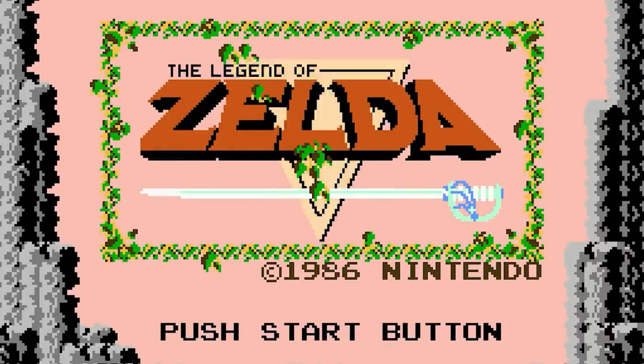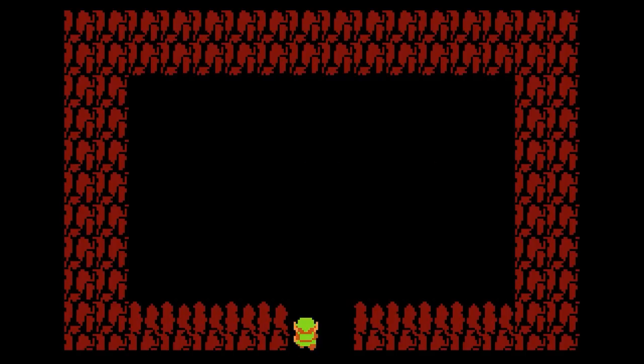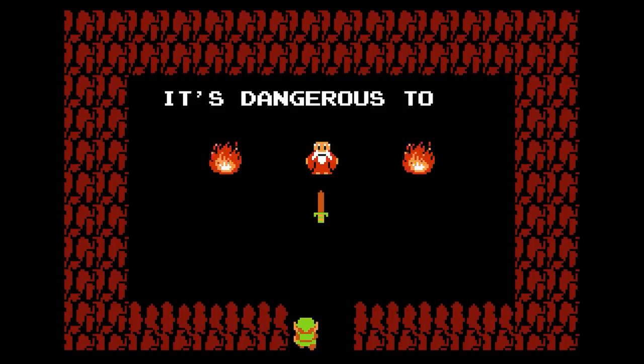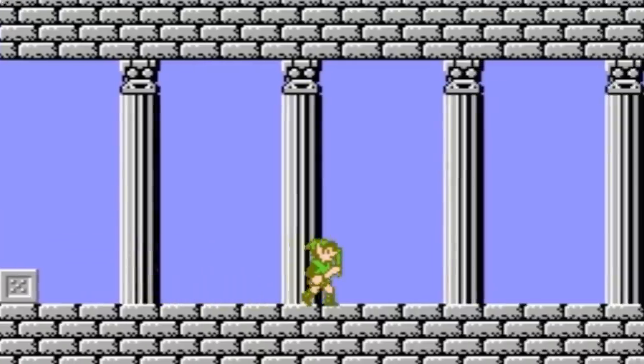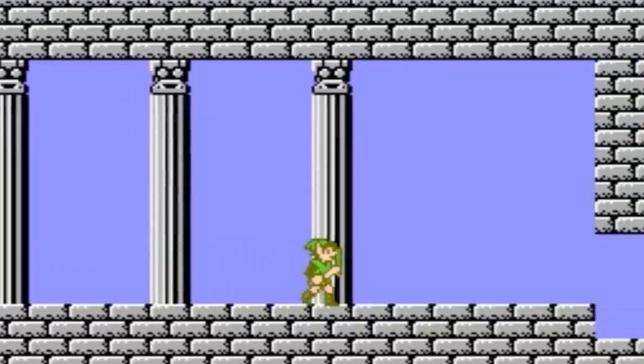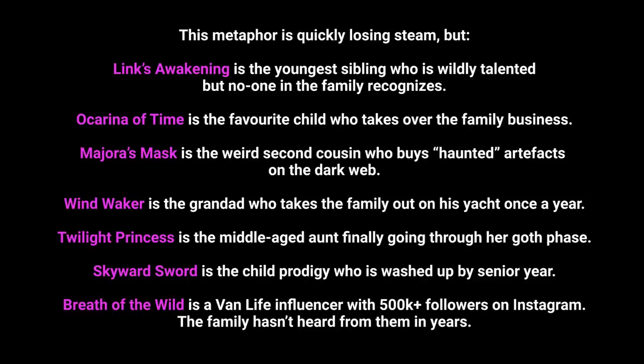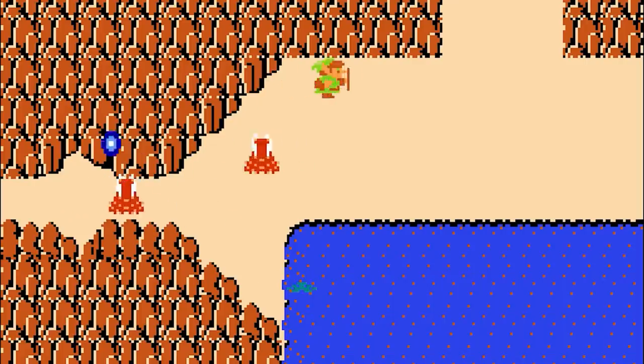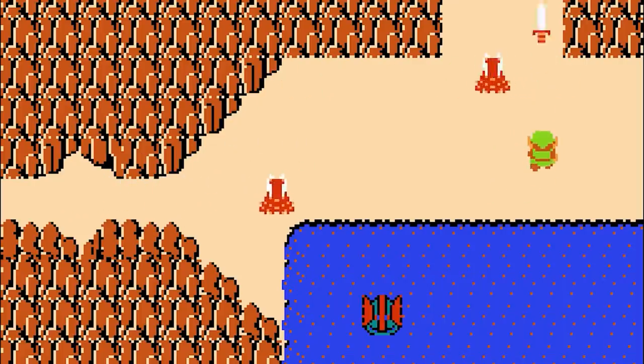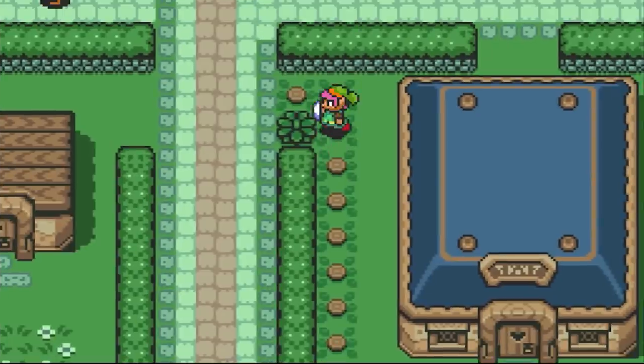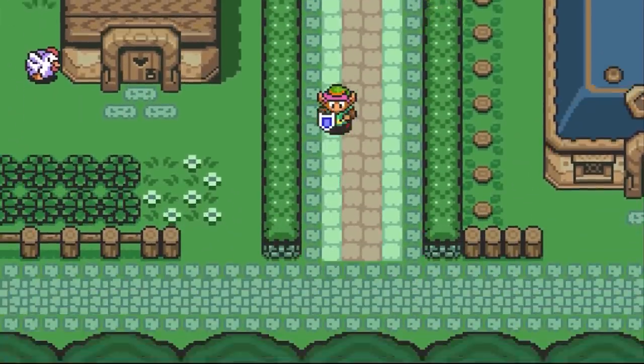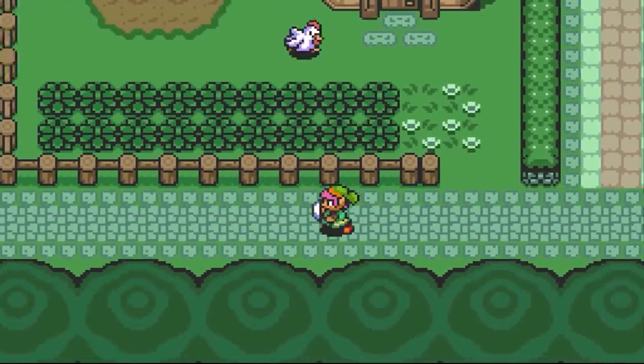Okay, I guess the original Legend of Zelda started it all, but that's more like the series' great-grandfather that you still visit but you don't really understand anything he says. And then Zelda 2 is like the great-uncle that you're not convinced is actually related to you. What I meant to say is that while the original Zelda gave us the main Zelda theme, which is certainly nothing to balk at, A Link to the Past gave us basically every other musical idea that we associate with the series today.